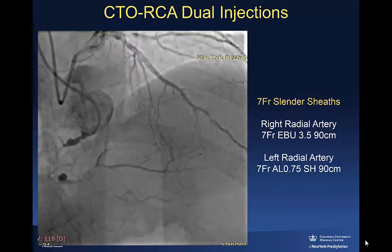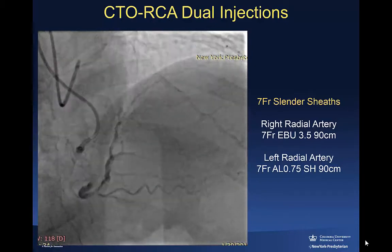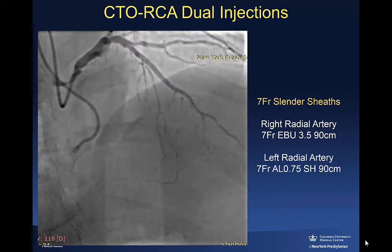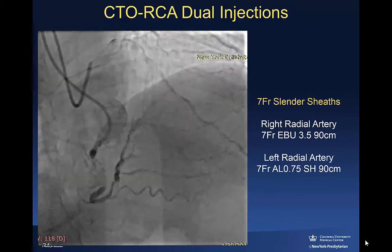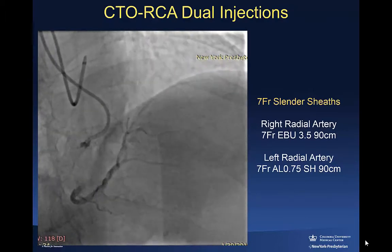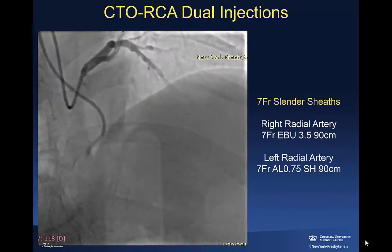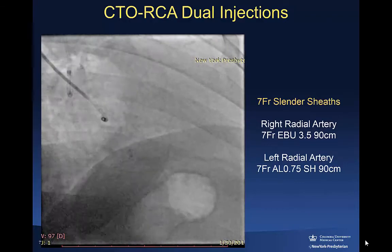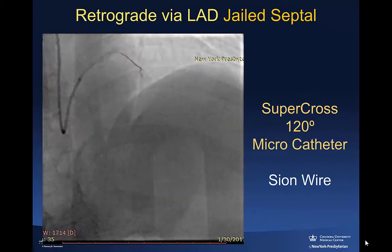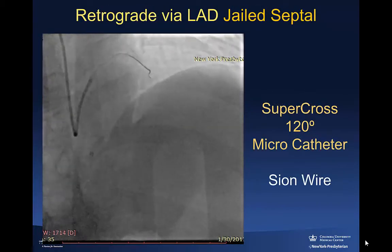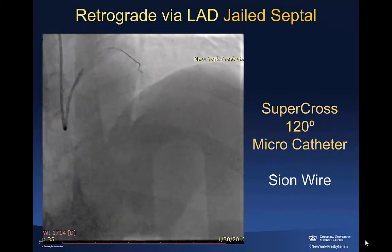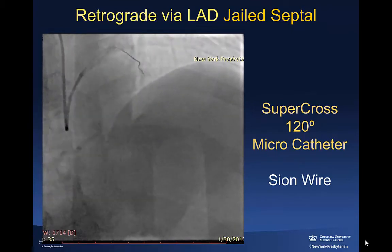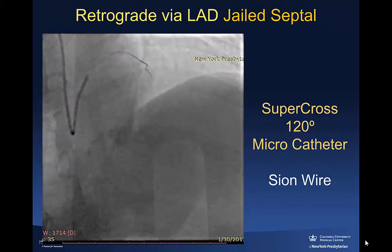This is the shot to understand the collaterals and their beautiful septal connections. If you pay close attention, the most promising septals — the conglomerate of the first and second septal — are jailed by the previous stent, and that sometimes poses some difficulties. So by the algorithm, we have an ambiguous proximal cap and good retrograde options, so this favors a retrograde approach, and that was our initial strategy.